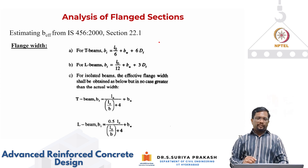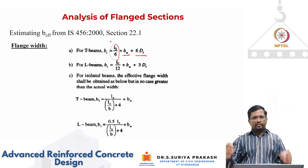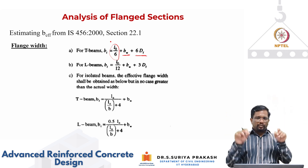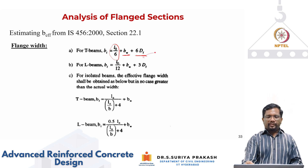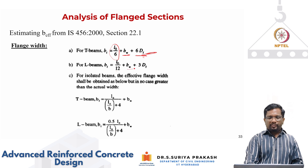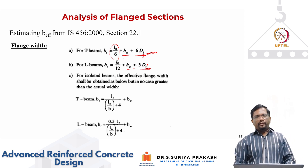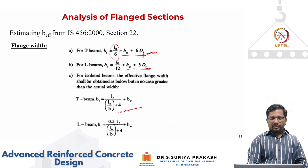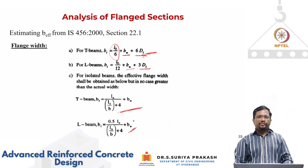IS456 defines the effective flange width for T-beams as: B_f = b_w + (L_0/6) + 6·D_f, where L_0 is the distance between the points of zero moment in a continuous system (i.e., the distance between points of contraflexure). For L-sections, it is: B_f = b_w + (L_0/12) + 3·D_f. For an isolated beam without a continuous system, the effective flange is obtained from: B_f = L_0/(L_0/B + 4) + b_w, with a corresponding formula for the isolated L-beam, as specified in IS456.